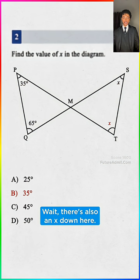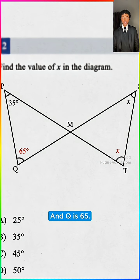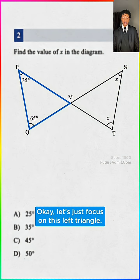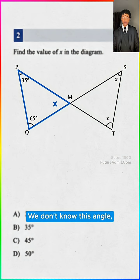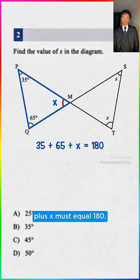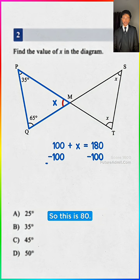Wait, there's also an x down here, and q is 65, but that's not even an answer. Brain blast. Okay, let's just focus on this left triangle. We don't know this angle, but all these must add up to 180. So 35 plus 65 plus x must equal 180, so this is 80.